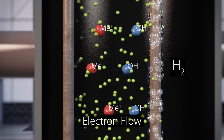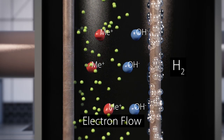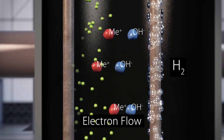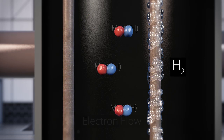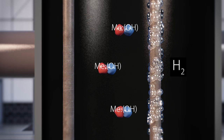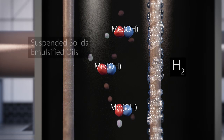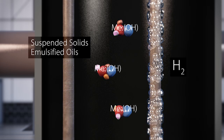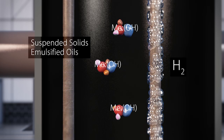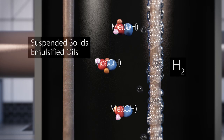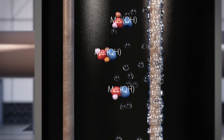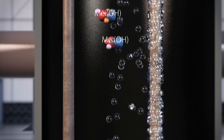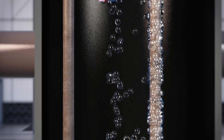As the reaction begins, metal ions complex with hydroxyl groups and form large flocs that include metals and other contaminants. Suspended solids and emulsified oils are readily entrained within the floc because of the destabilized surface charges. Finally, the hydrogen gas bubbles help to separate and lift the flocs. These cooperative reactions are what make the EC process so effective and efficient.